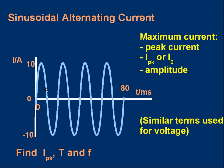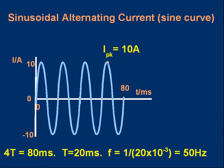The peak current is usually stated as a positive value — in our example, it's 10 amps. Similarly, for a graph of voltage against time we'd have a peak voltage. For a practice graph: the peak current is 10 amps, read directly from the current axis. To find the period, count the complete cycles in 80 milliseconds — there are 4 complete cycles, so the period is 20 milliseconds. The frequency is therefore 1 over 20 × 10⁻³ seconds, giving 50 hertz — which is in fact the frequency of the mains supply in the UK.